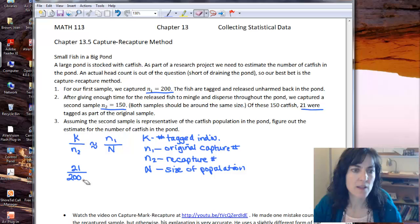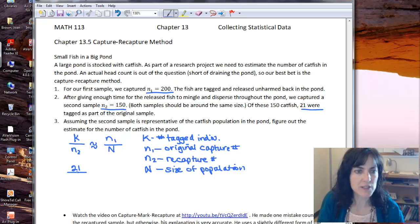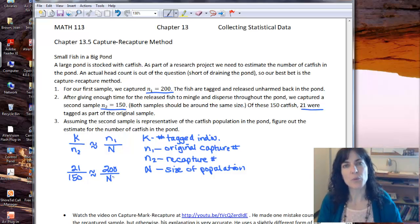I'm in trouble. So here we put the N sub 2, and that's 150. And that was how many we captured in the recapture phase. And then we do N sub 1, which was our capture phase, that was 200. And it's in a ratio with big N, which is the part that we don't know.